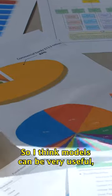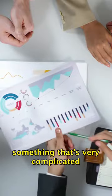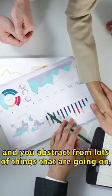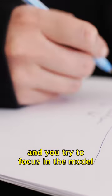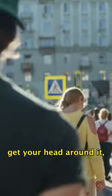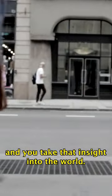So I think models can be very useful, but what they're good at is helping you to think through something that's very complicated. You abstract from lots of things that are going on and you try to focus in the model one key point of an argument and get your head around it. And then you throw the model away, you take that insight into the world.